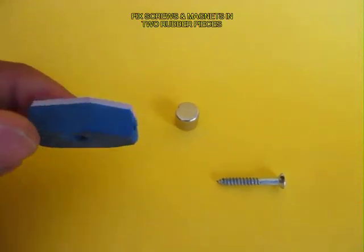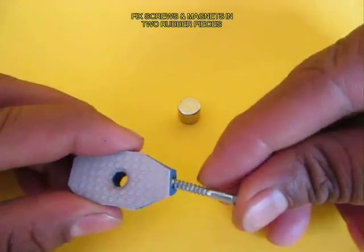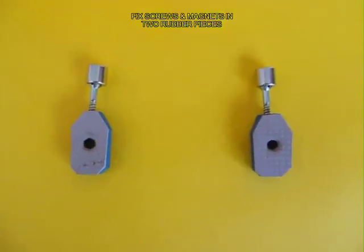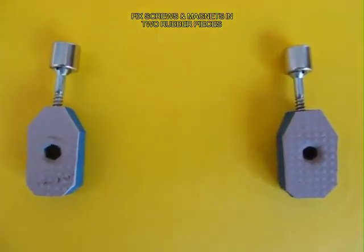Now take a piece of rubber with a hole in the middle and fix a screw in it and stick a strong neodymium magnet to the head of the screw. You need two such pieces of rubber with screws and magnets.